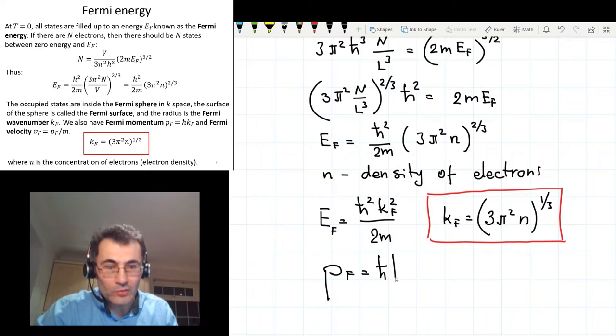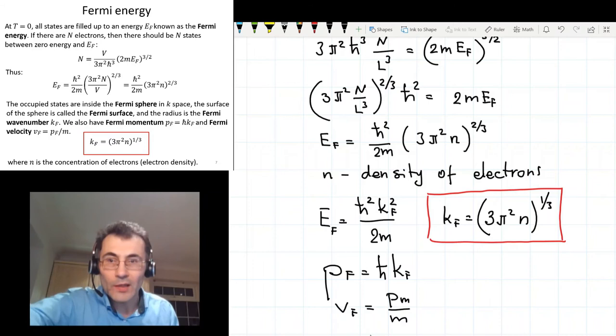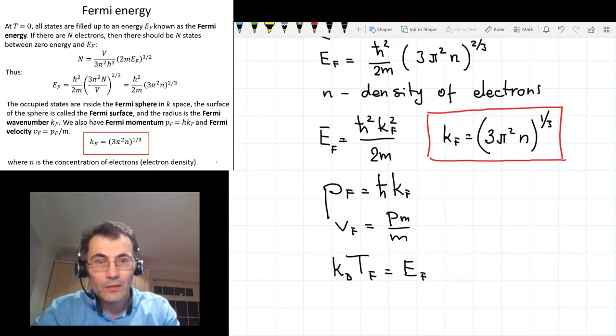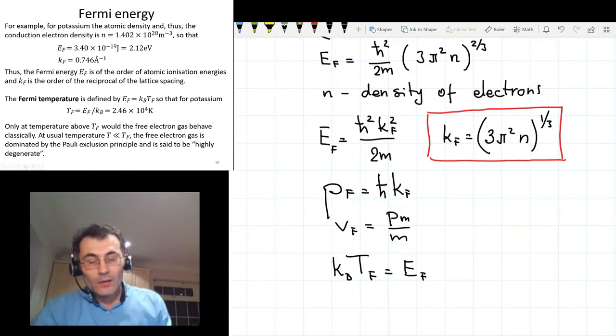And then we can introduce also the Fermi velocity, which is the parameter that we will use quite often. So the Fermi velocity is simply the Fermi momentum divided by the mass. And last but not least, we can also introduce Fermi temperature, which is defined in the following way: the product of Boltzmann constant and Fermi temperature is the Fermi energy.